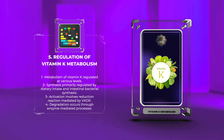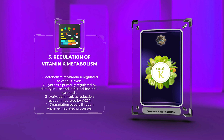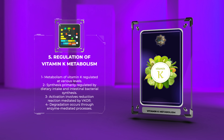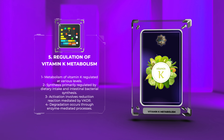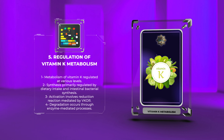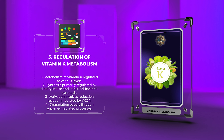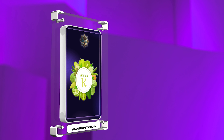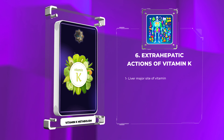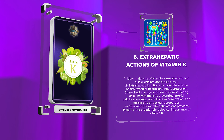Liver diseases, such as cirrhosis, can have a significant impact on vitamin K metabolism. The liver is responsible for the synthesis of clotting factors and the regulation of vitamin K stores. In liver diseases, the production of vitamin K-dependent clotting factors may be impaired, leading to a coagulopathy. Additionally, impaired liver function can affect the clearance and transport of vitamin K, further exacerbating vitamin K deficiency. Understanding the impact of liver disease on vitamin K metabolism is crucial for managing coagulation disorders in patients with liver dysfunction.